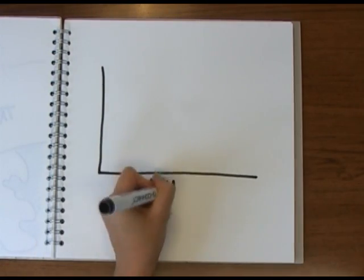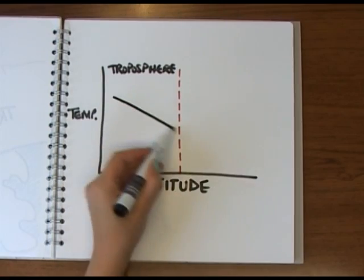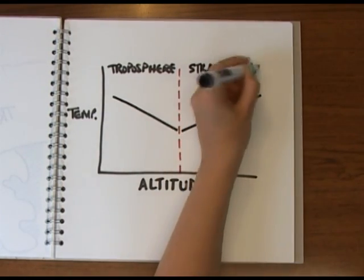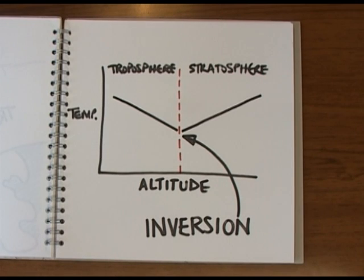Here the air stops cooling with altitude and starts warming up again. This causes something called an inversion layer, with the warmer, less dense air of the stratosphere sitting over the colder, denser air of the troposphere.